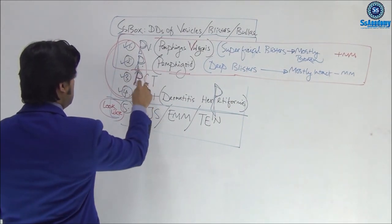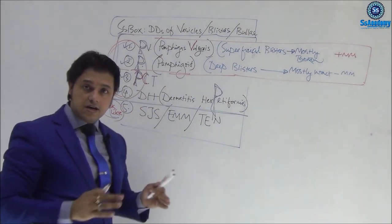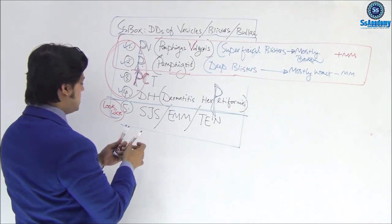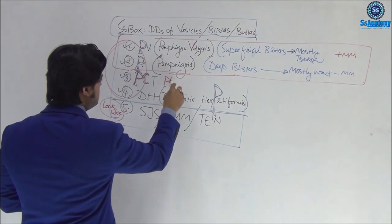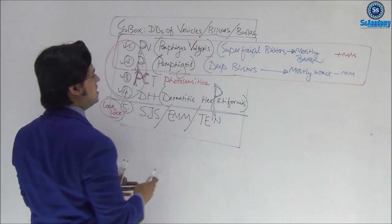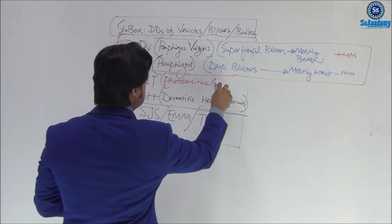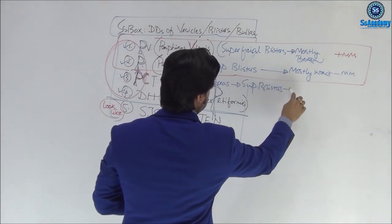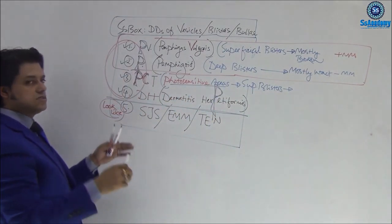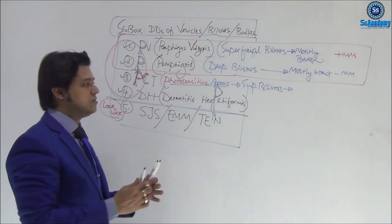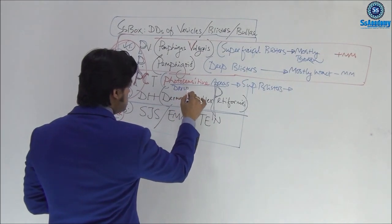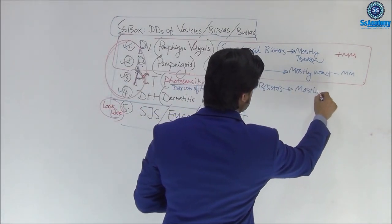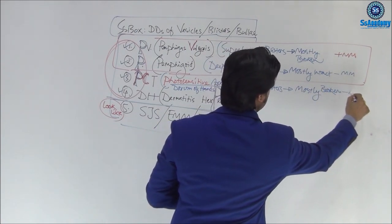Next, Porphyria Cutanea Tarda — 'cutanea' means cutaneous manifestation. The key word is P for photosensitive areas. There are superficial blisters over photosensitive areas, specifically the dorsal of the hands. These are mostly broken blisters, and there is no mucous membrane involvement.